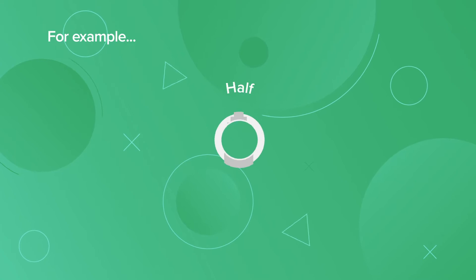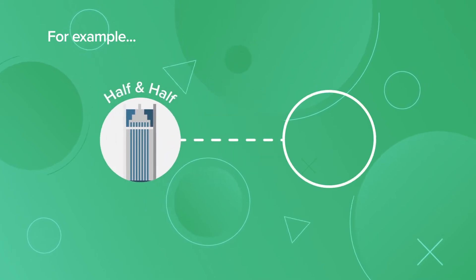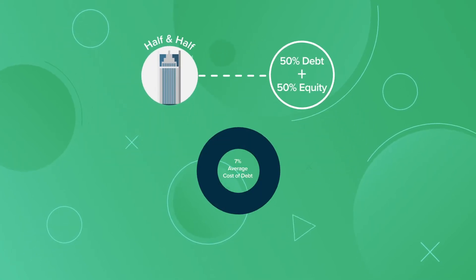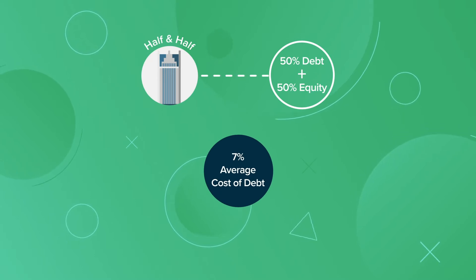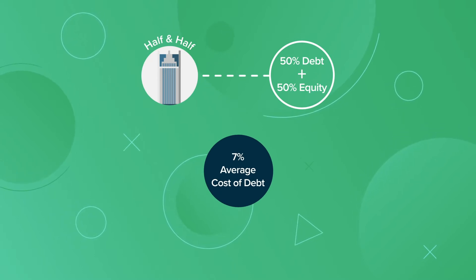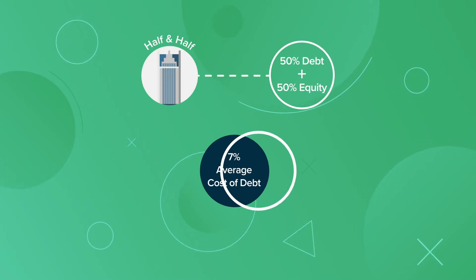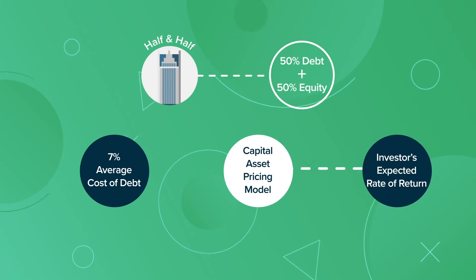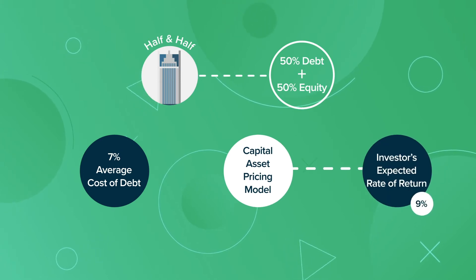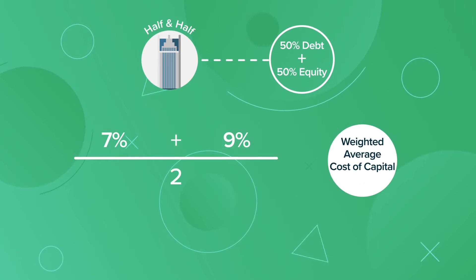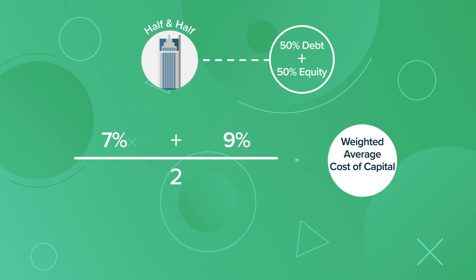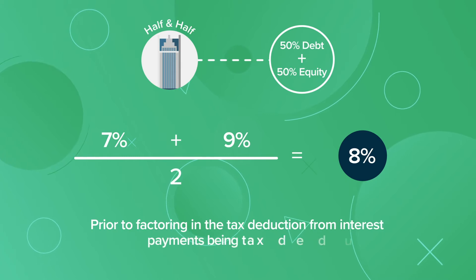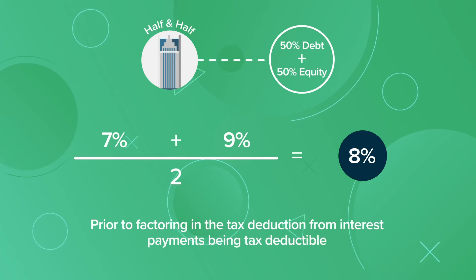For example, Company Half & Half has a capital structure of 50% debt and 50% equity. Their average cost of debt from the bonds they have issued is 7%. Because stocks do not carry a stated cost, they use the capital asset pricing model to estimate investors' expected rate of return, which comes out to 9%. Their weighted average cost of capital is therefore 8% prior to factoring in the tax deduction from interest payments being tax deductible.